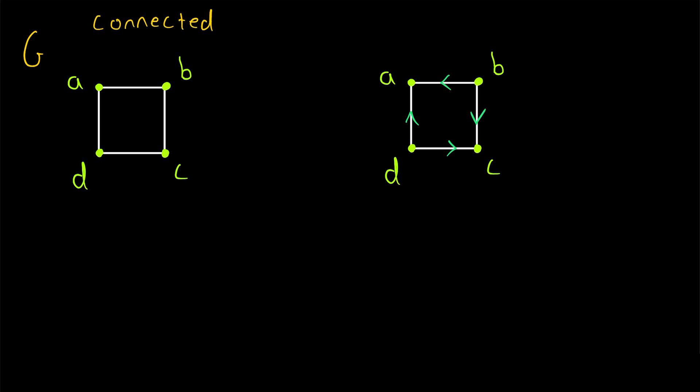And in fact, despite everything I just said, we would call this directed graph connected — more specifically, we would call it weakly connected.